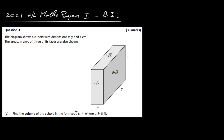In this video I'm going to have a look at the 2021 Higher Level Maths Paper 1, Question 3. This is an area and volume type question. We have a cuboid with dimensions x, y and z, and we're given the area of each face. So x times z gives us 2√2, y times z gives us 8√6, and x times y gives us 4√3.